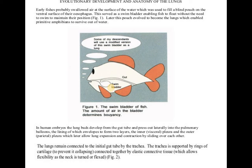The swim bladder structure played a very important role in the evolution of the lungs. In primitive fish, there was a pneumatic sac. From the pneumatic sac, there were two types of adaptations: one led to the swim bladder present in modern fish, and the other led to the evolution of lungs. So from the pneumatic sac came both the swim bladder and the lungs.